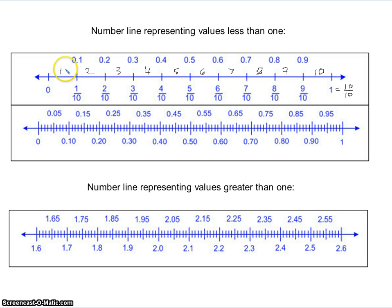This number line could be labeled — each marking could be labeled using decimals or using fractions. We know that the first place value behind the decimal is referred to as tenths. So we could label each marking as 1 tenth, 2 tenths, 3 tenths, and so on using our decimals, just like you see here at the top.